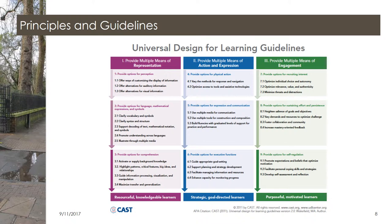Universal Design for Learning guidelines are divided into three sections which correspond to the three networks: recognition, strategic, and affective. Section 1 covers multiple means of action and expression and is intended to produce strategic, goal-directed learners. Section 3 addresses multiple means of engagement and is intended to create purposeful, motivated learners. Each section contains principles which address a certain concept within that topic. I provided you with a handout with a graphic organizer on one side and a text-based educator workshop on the other. In a few moments, we'll take a look at some of these specific principles.